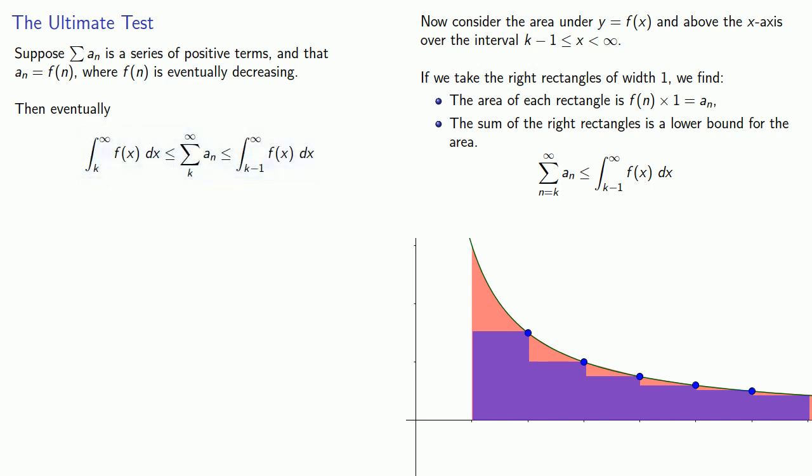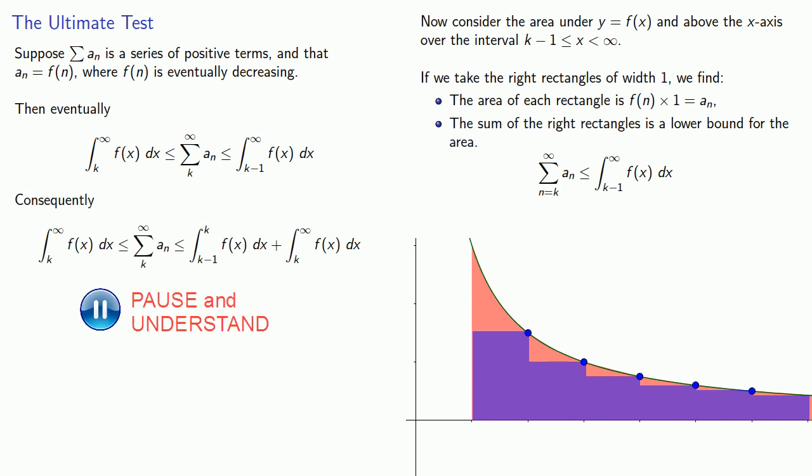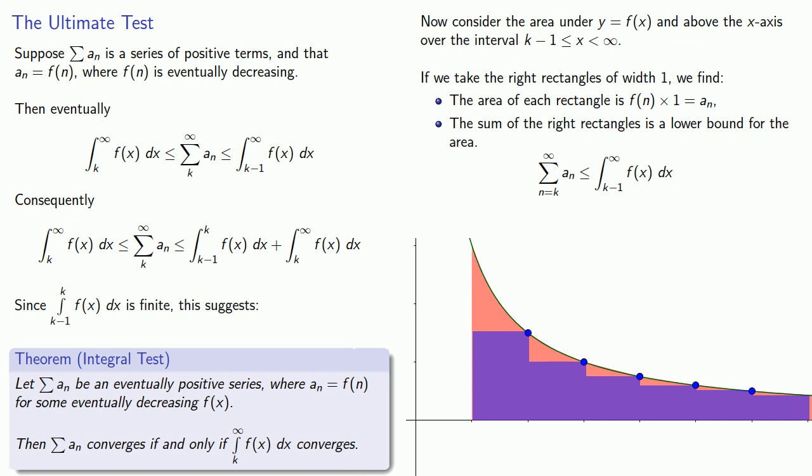We can use the additivity property of the definite integral to rewrite these bounds. And since the integral from k minus 1 to k of f of x dx must be finite, this suggests the following result. Let our series be an eventually positive series where the terms a n are given by f n for some eventually decreasing function f of x. Then our series converges if and only if the improper integral converges.